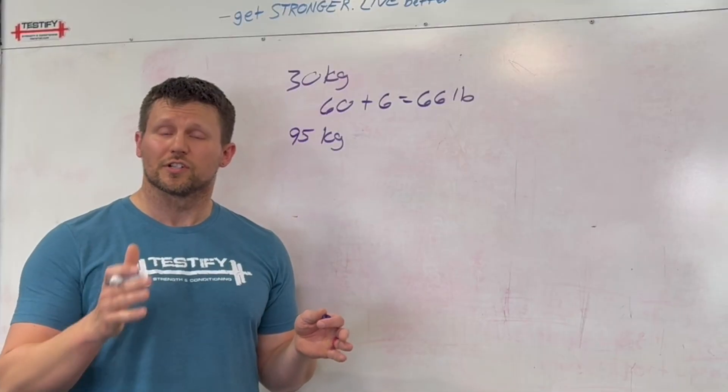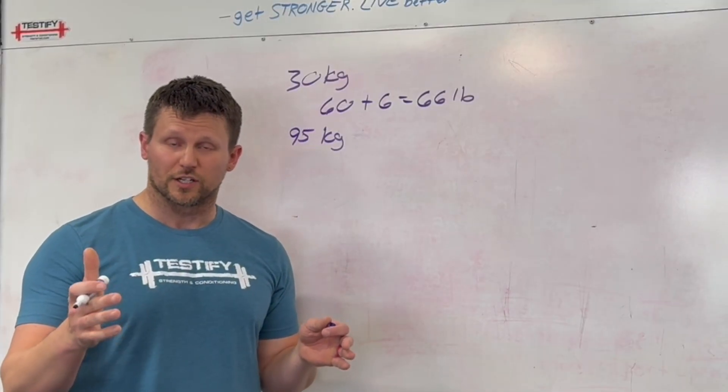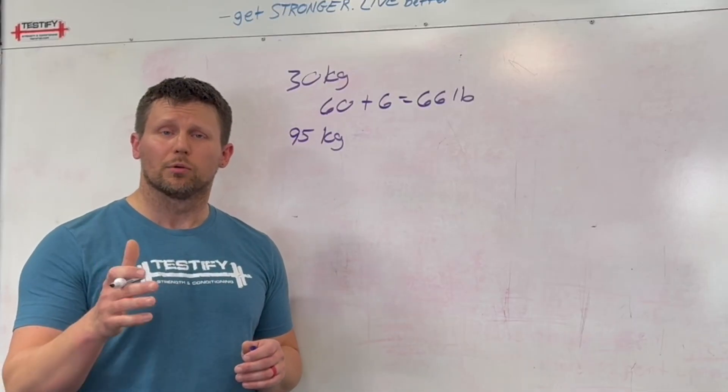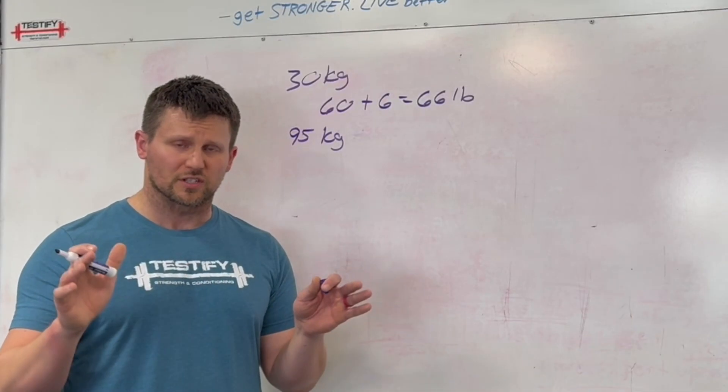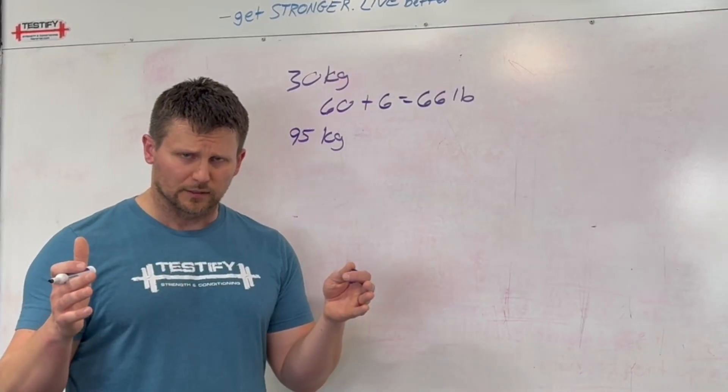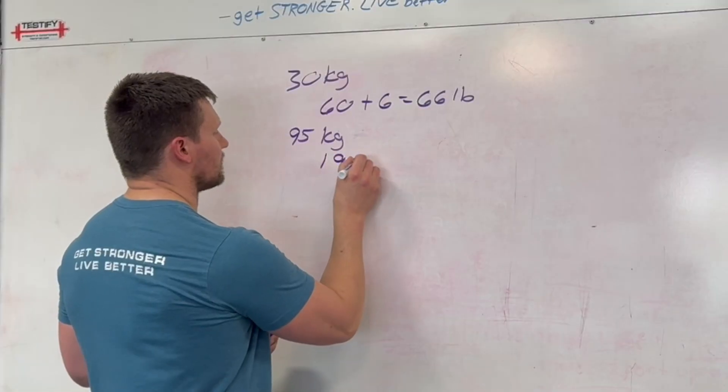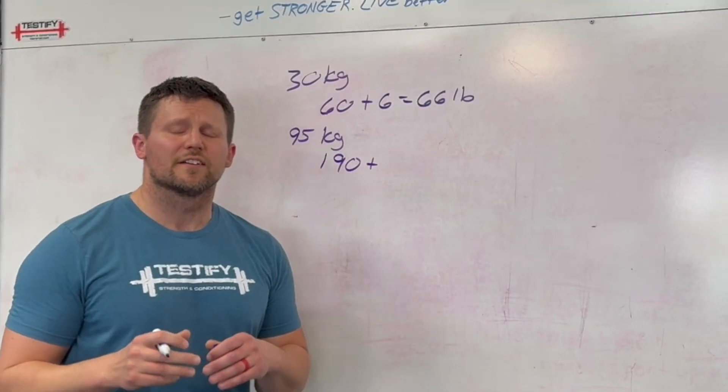95 kilograms, the first thing that we're going to do, and you can pause this and try it out on your own if you want to. That's a really useful way to do it and then come back and check and see if you're getting it right. 95 kilograms, you double the 95. None of this 2.2 stuff, just double the 95. Might take a little bit of thinking. Eventually, you figure out it's 190.